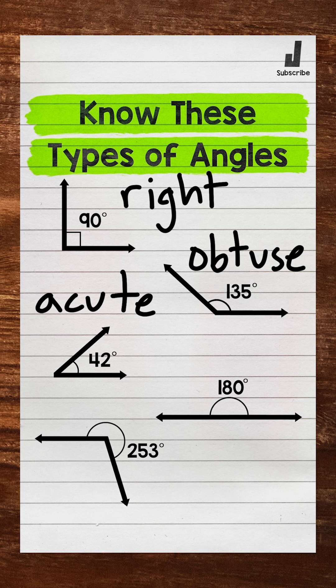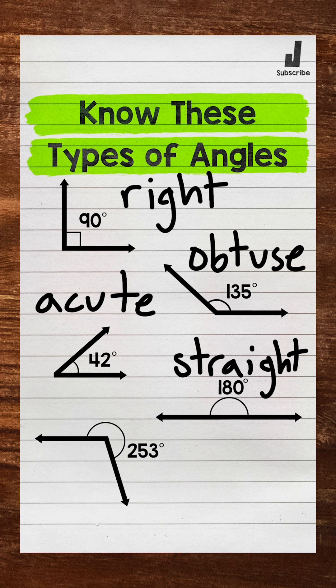Next, we have an angle that is 180 degrees. This is an example of a straight angle. Straight angles are exactly 180 degrees.